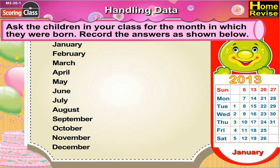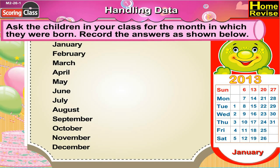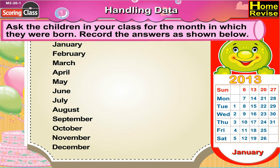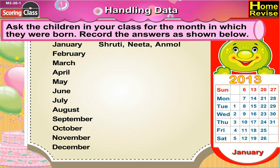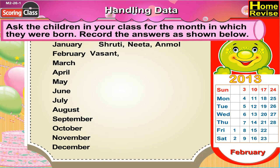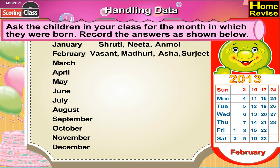I'll be preparing a list of my friends with their names in front of the months they have their birthday in. In January, Shruti, Nita and Anmol have their birthday. In February, Vasanth, Mathuri, Asha and Surjit have their birthday.